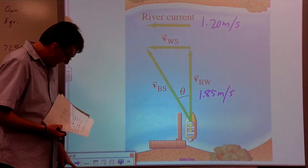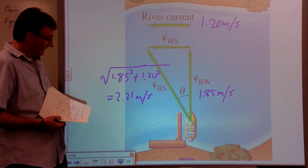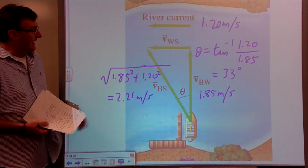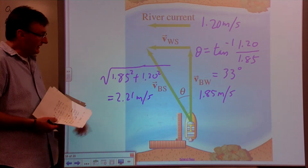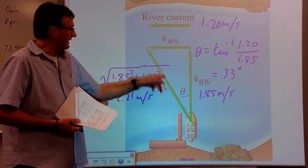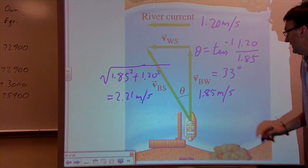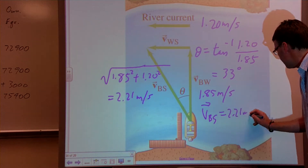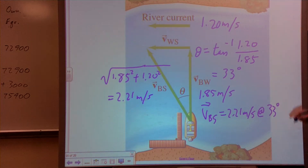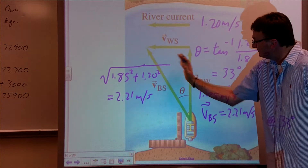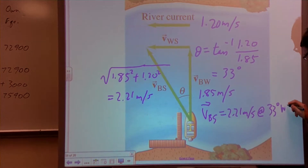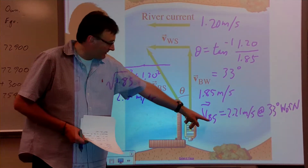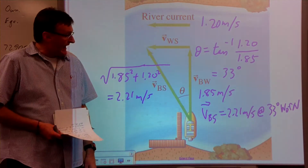Let's say the river current is 1.2 meters per second and the speed of the boat relative to the water is 1.85 meters per second, headed directly across the river. Using the Pythagorean theorem for the resultant, the boat is moving at 2.21 meters per second. Using the inverse tangent ratio, we get an angle of 33 degrees. So the velocity of the boat with respect to the shore is 2.21 meters per second at 33 degrees west of north.